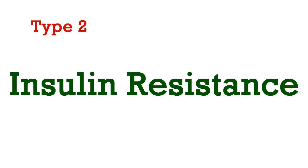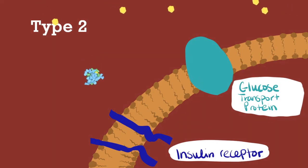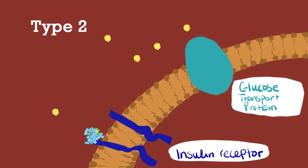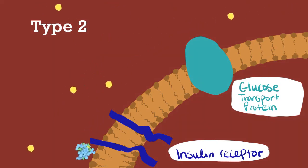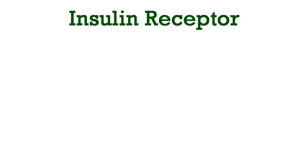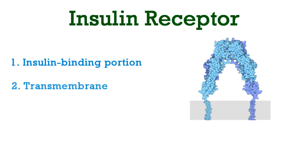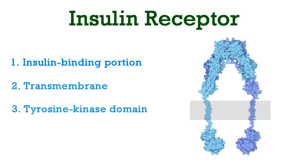Type 2 diabetes is known as insulin resistance. Somatic cells are not able to respond to insulin in the blood, and therefore are not able to take up sugar from the blood. Insulin receptors consist of three segments: the insulin binding portion, the transmembrane domain, and the tyrosine kinase domain.